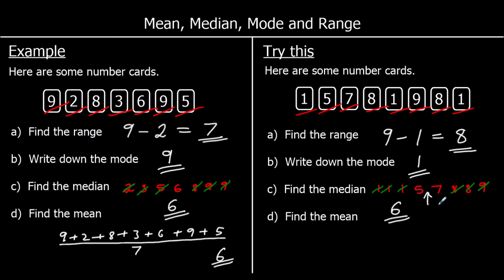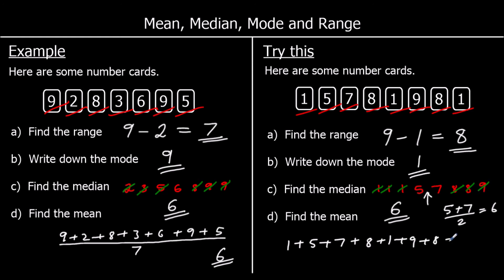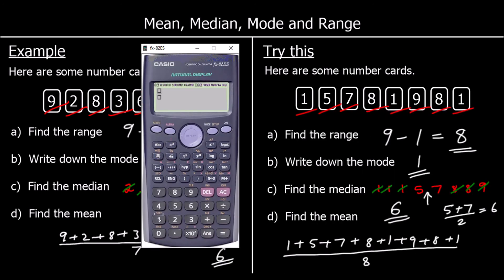And if we've got more difficult numbers and it's harder to work out, we can add them up and divide by 2. So to find the median, we go halfway between the two numbers left in the middle — we add them up and halve them. And finally the mean: we add up all the numbers — 1 plus 5 plus 7 plus 8 plus 1 plus 9 plus 8 plus 1 — divided by 8 numbers this time. And we've got 5.